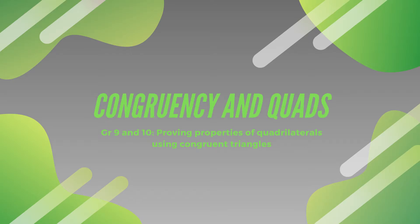Hello everyone. In this video I'm going to discuss proving various properties of quadrilaterals using congruency. The first thing you need background knowledge on is how to prove two triangles are congruent. Secondly, it's helpful if you know the basic properties of a rectangle, rhombus, parallelogram, and square — specifically the properties of their sides, angles, and angles created using the diagonals.